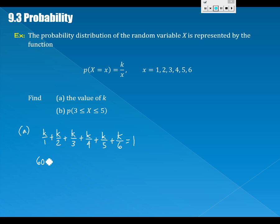So multiply by 60: 60k + 30k + 20k + 15k + 12k + 10k equals 60. And that gives us 90k, 110k, 125k, 130k, 140k, 147k equals 60.